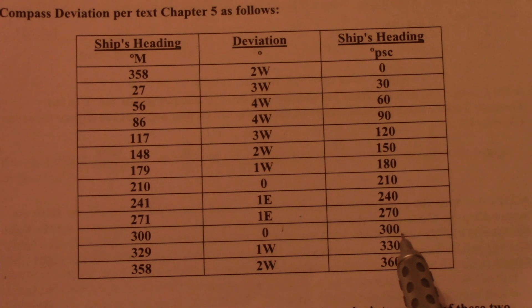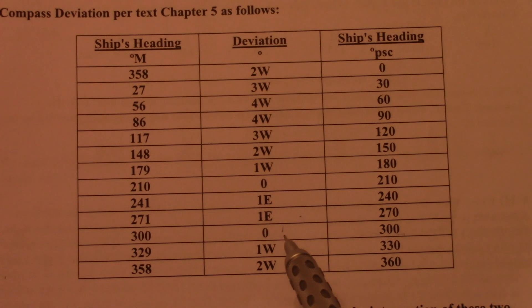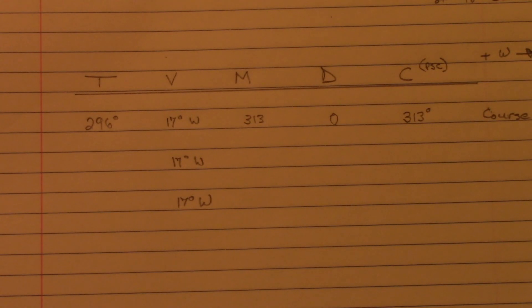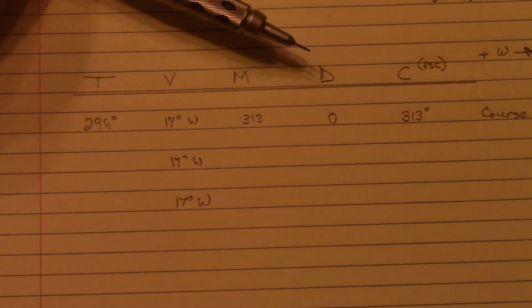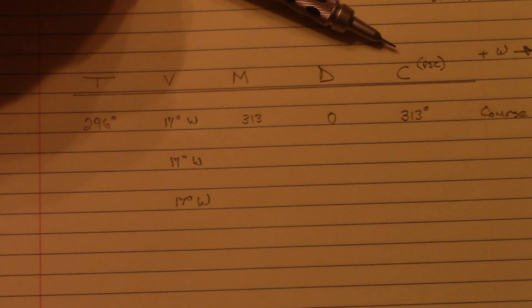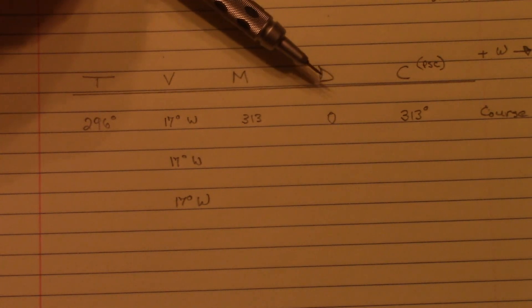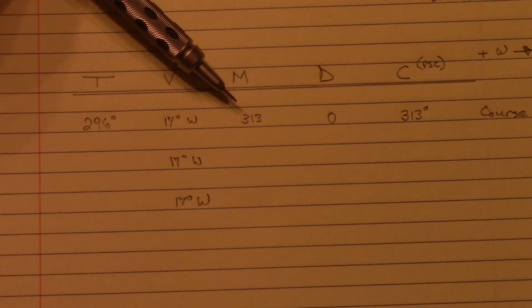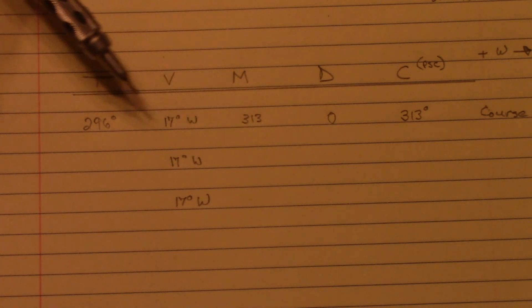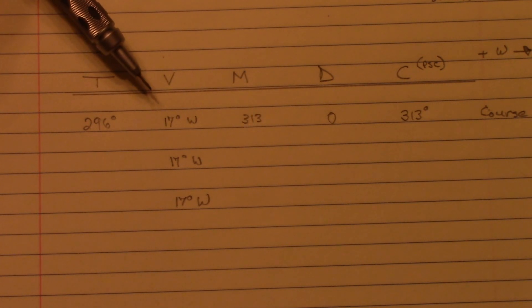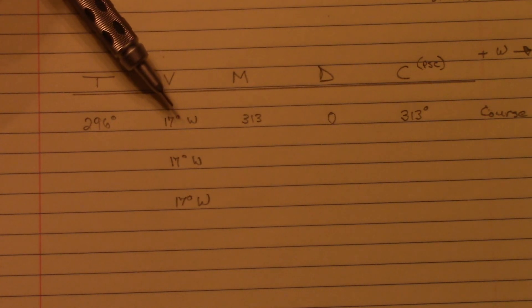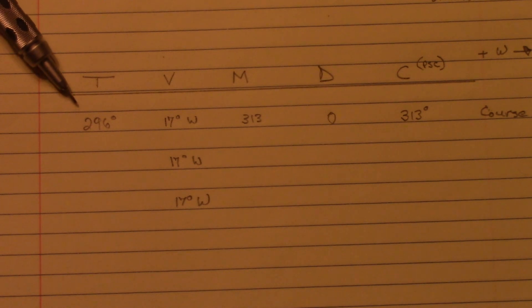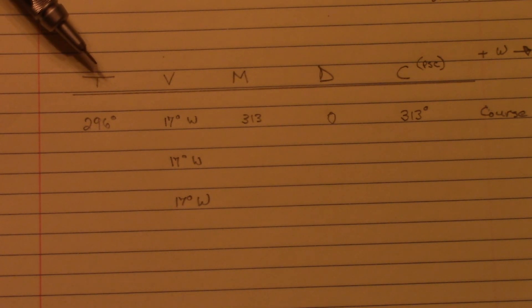In the deviation table, we use the ship's heading column and find what's closest to 313 degrees — that's 300, and the deviation is 0. With deviation being 0, our course magnetic is the same: 313 degrees. Since we're moving from right to left, we subtract westerly variation: 313 minus 17 degrees gives us 296 degrees true.